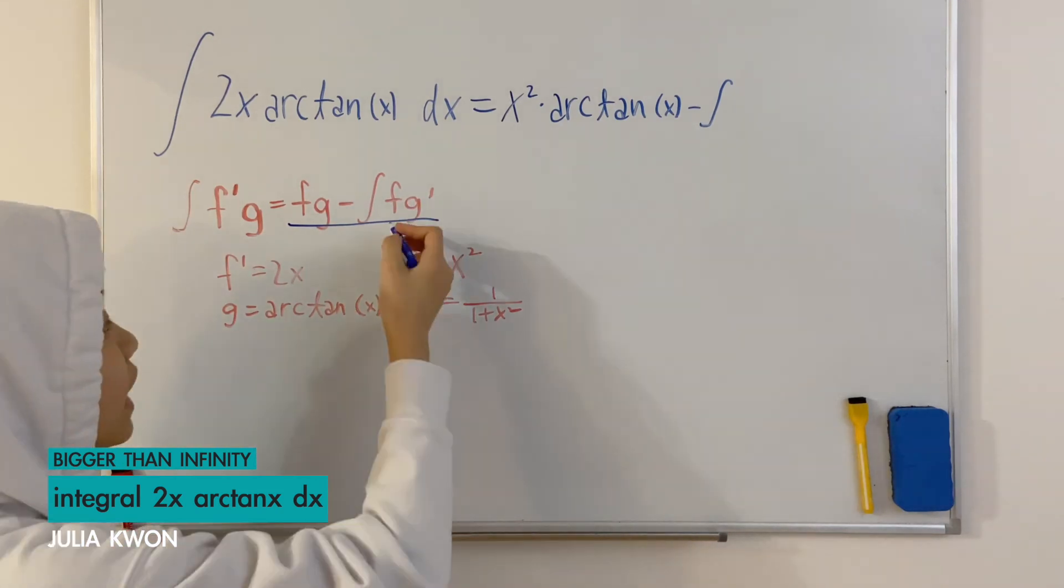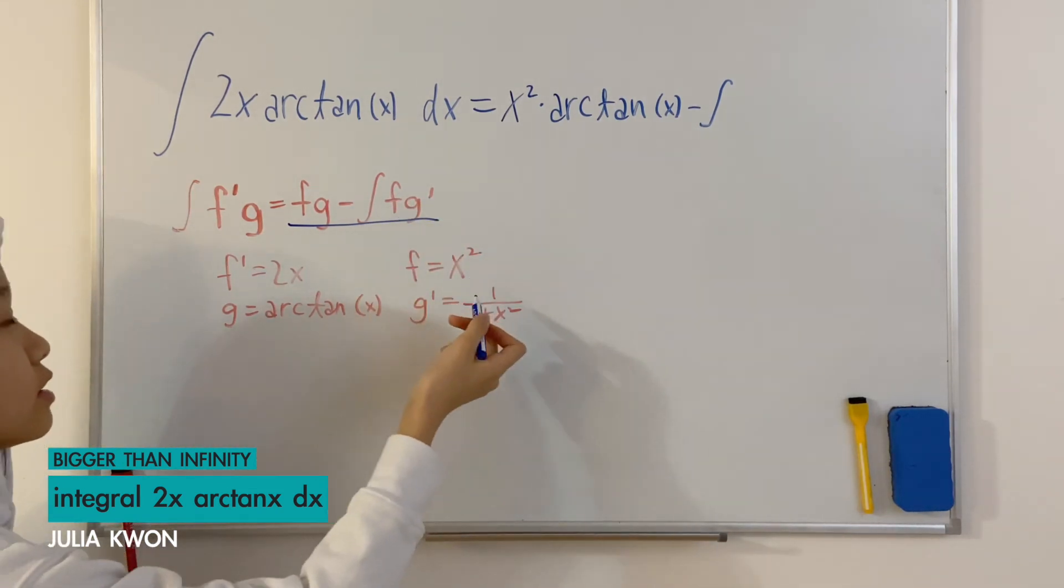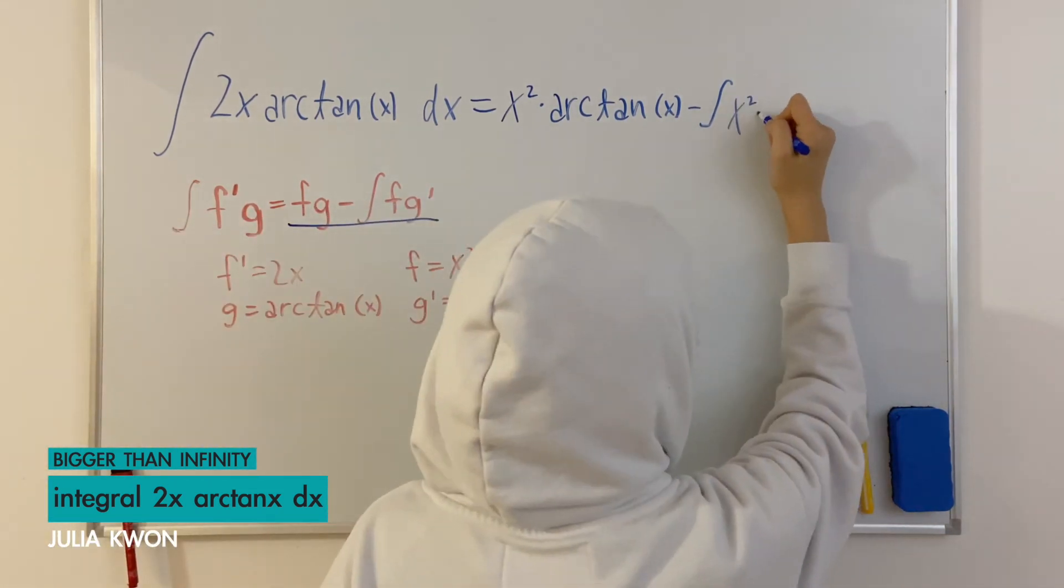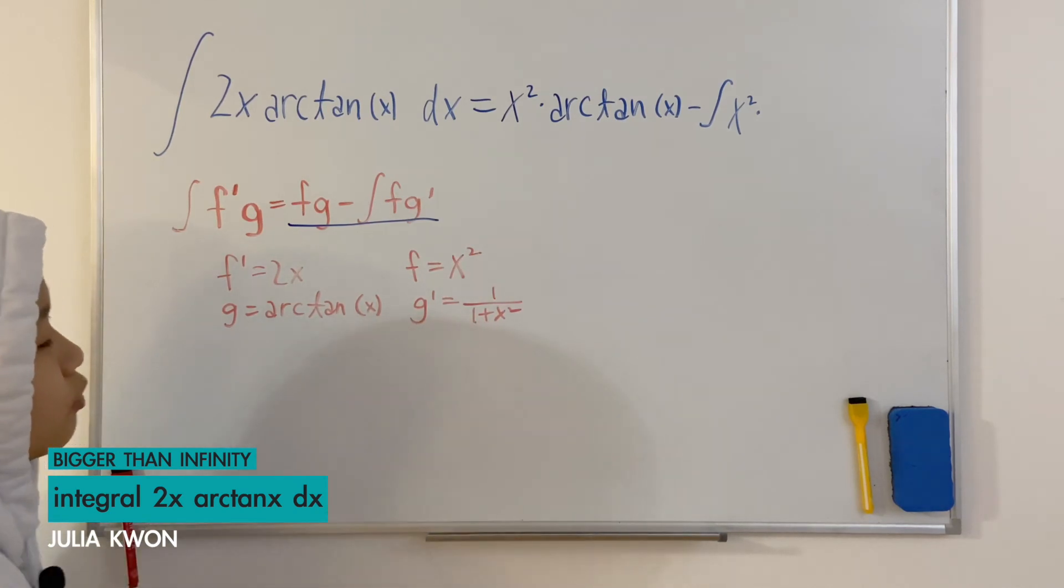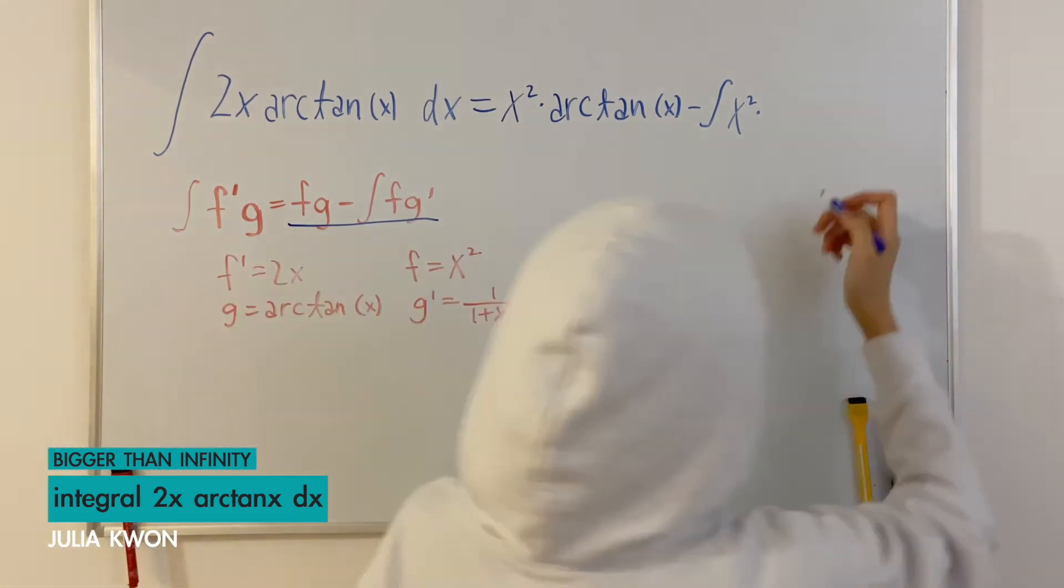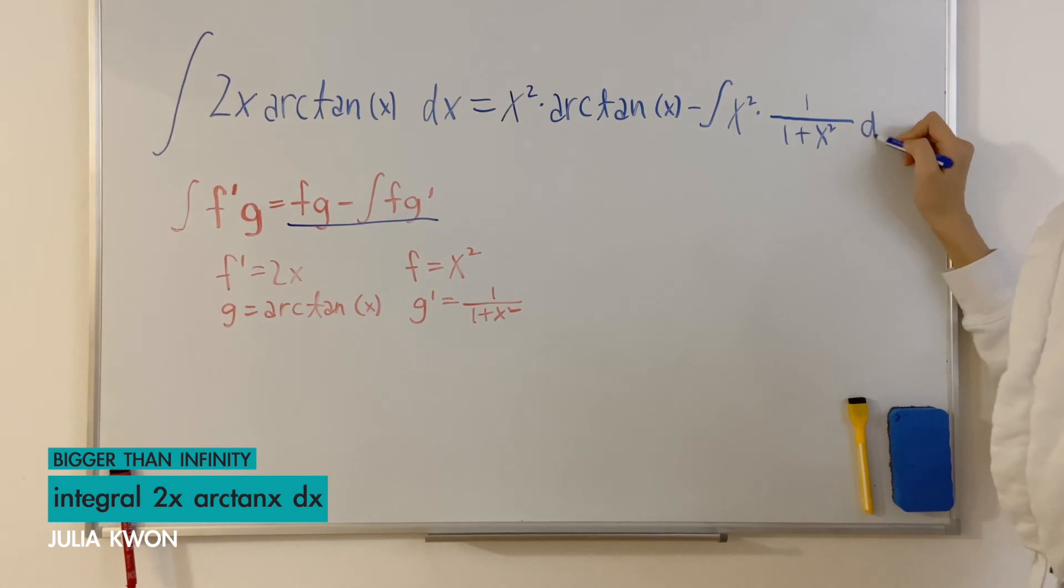f which is x squared times g prime which is equal to 1 over 1 plus x squared dx.